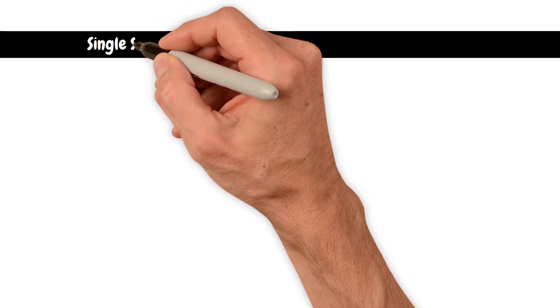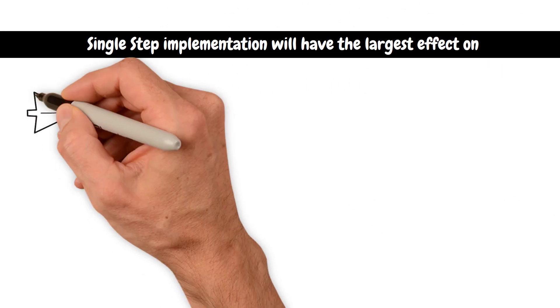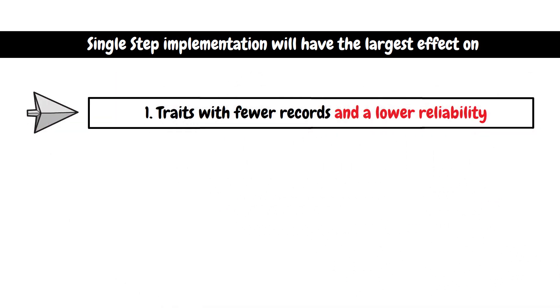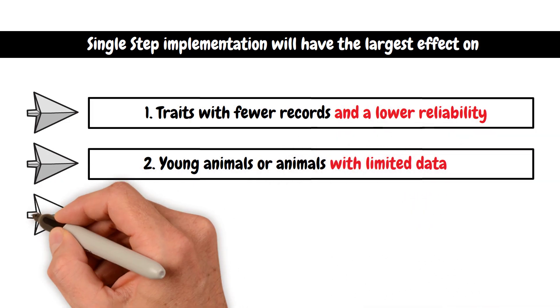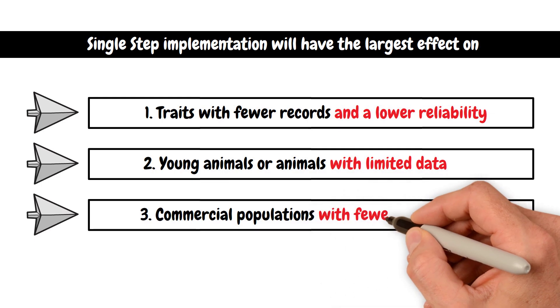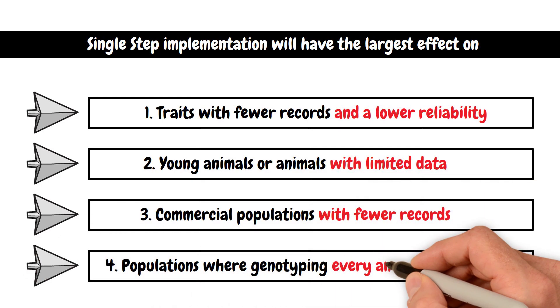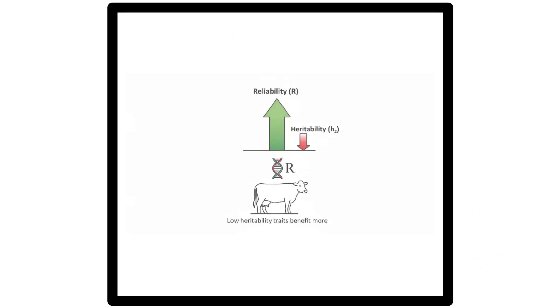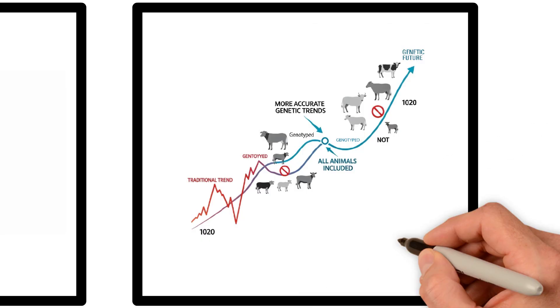Real-world impact. Single-step implementation will have the largest effect on: 1. Traits with fewer records and a lower reliability. 2. Young animals or animals with limited data. 3. Commercial populations with fewer records, and 4. populations where genotyping every animal isn't practical. You also get a reliability boost for most traits, but especially those with lower heritability. More accurate genetic trends, because all animals are included.